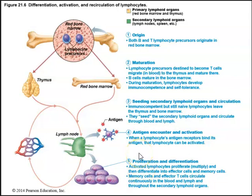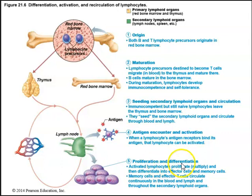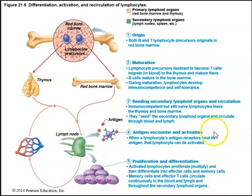When these cells encounter an antigen, lymphocyte activation occurs. When a lymphocyte's antigen receptors bind its antigen, the lymphocyte is activated. Then we have proliferation and differentiation: activated lymphocytes proliferate or multiply, then differentiate into effector cells and memory cells. Memory cells and effector T-cells circulate continuously in the blood, lymph, and throughout the secondary lymphoid organs.